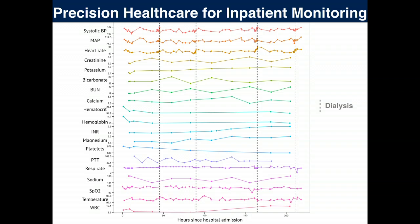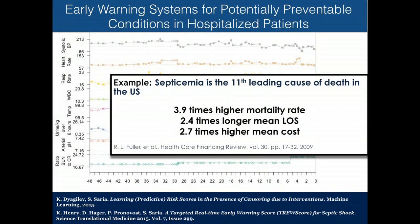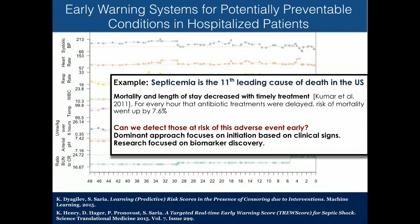This is now a system we've deployed and are continually improving. Switching gears to the inpatient setting — we're using these ideas with many different markers at varying granularities. One concrete example is sepsis, the 11th leading cause of death, with 3.9 times higher mortality rate, 2.4 times longer length of stay, and much higher costs. Exciting work at Stanford is looking at gene expression measurements changing as someone develops sepsis, but those approaches require you to first suspect the patient is at risk before making those measurements.